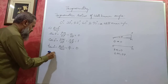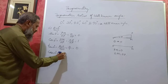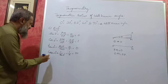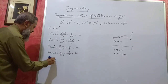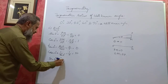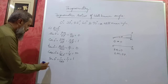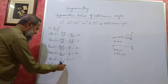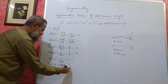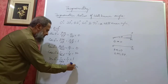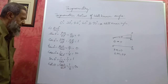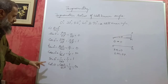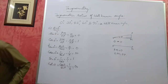Cosecant 0° is 1 by sin 0° = 1 by 0 = infinity, since anything divided by 0 is infinity. Secant 0° is 1 by cos 0° = 1 by 1 = 1. Cot 0° is cos 0° by sin 0° = 1 by 0 = infinity. So these are the values: sin 0° = 0, cos 0° = 1, tan 0° = 0, cosec 0° = ∞, sec 0° = 1, cot 0° = ∞.